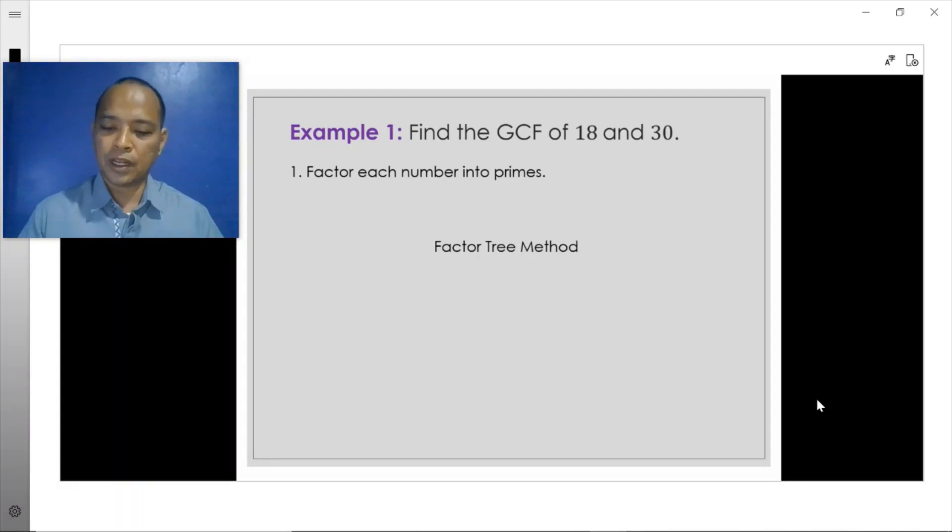For example, 18 can be decomposed into the factors 6 and 3. We stop decomposing 3 because 3 is already a prime number. 6, on the other hand, we continue decomposing this number because 6 is not yet a prime number. 6 can then be decomposed into the factors 2 times 3.